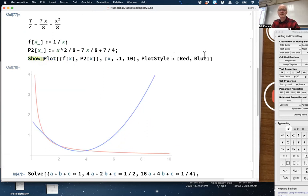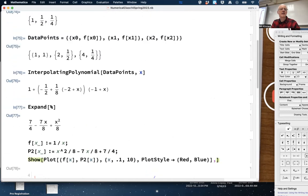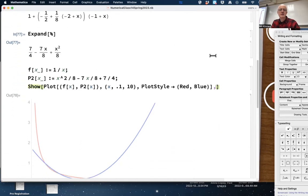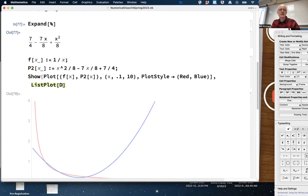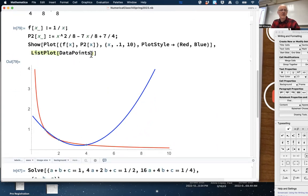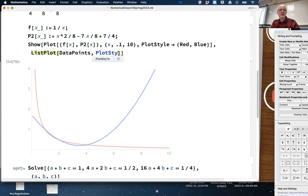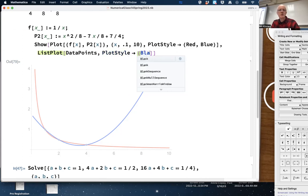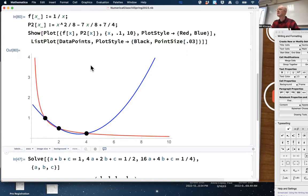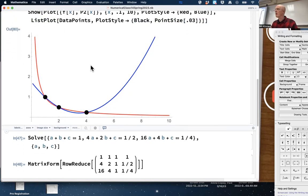Plot them. There they are. There's the graph itself. 1/x is in red and the interpolating quadratic is in blue. If we want to plot the data points along with that, we could show this plot with a list plot of the data points. Make them bigger too, black point size, say 0.03. There they are. Three big data points both graphs go through.